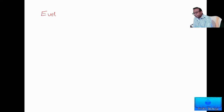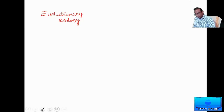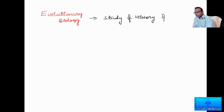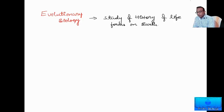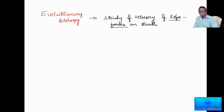Evolutionary biology or evolution means the study of the history of life forms on earth. Each and every organism which is found on earth has its own history — how it has evolved, from which organism it evolved, when it evolved, through what stages did it go. That is what we call the history of life forms of an organism.